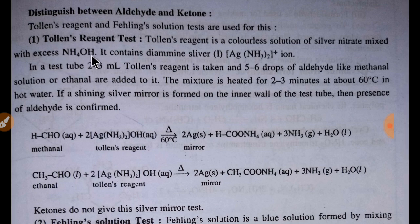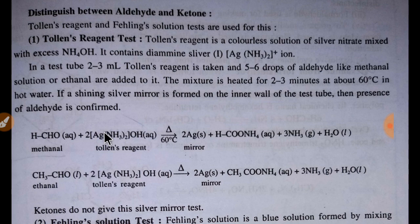It contains diamine silver ion. I will give you the link of a specific video on Tollens' reagent so you can view that to get more idea. Diamine silver hydroxide is called Tollens' reagent. Now our target is how to distinguish between aldehyde and ketone.